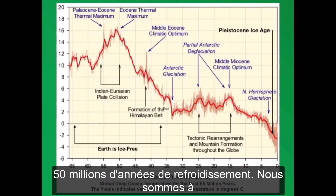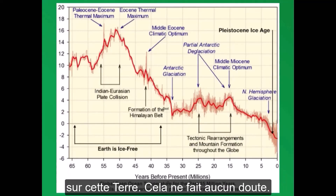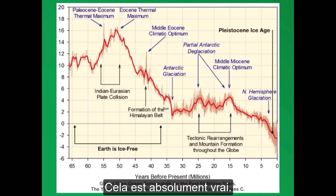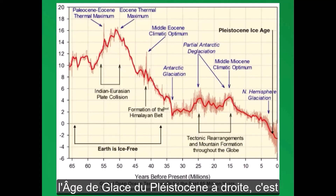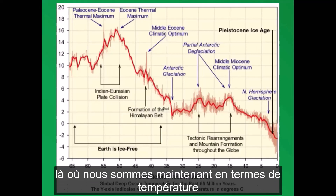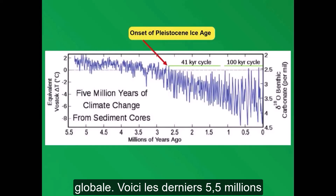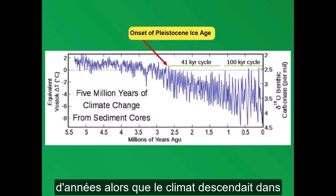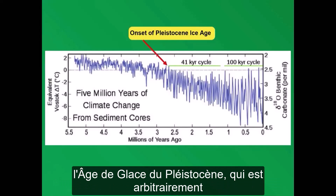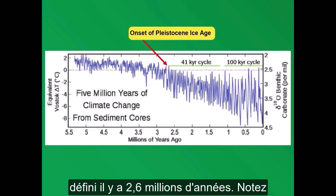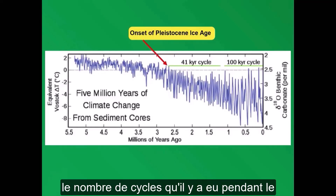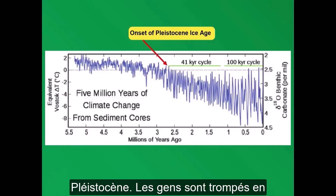50 million years of cooling. We are at the tail end of a 50-million-year cooling period on this Earth — there's no question of this, this is absolutely true. At the tail end, where you see Pleistocene Ice Age on the right, that is where we are now in global temperature. Here's the last 5.5 million years as the climate descended into the Pleistocene Ice Age, arbitrarily designated at 2.6 million years ago. People are fooled into thinking that the end of the most recent major glacial advance was the end of the Ice Age — the Ice Age has had over 40 of those.